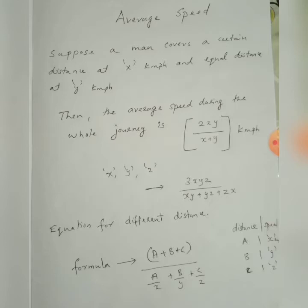Now look at the formula for different distances. A person travels 10 km at a particular speed, then 15 km at a different speed, then maybe another 20 km at yet another speed — the distances and speeds are both different. In this case we use the formula: (a + b + c) divided by (a/x + b/y + c/z), where a, b, and c are the different distances, and x, y, z are the corresponding speeds.